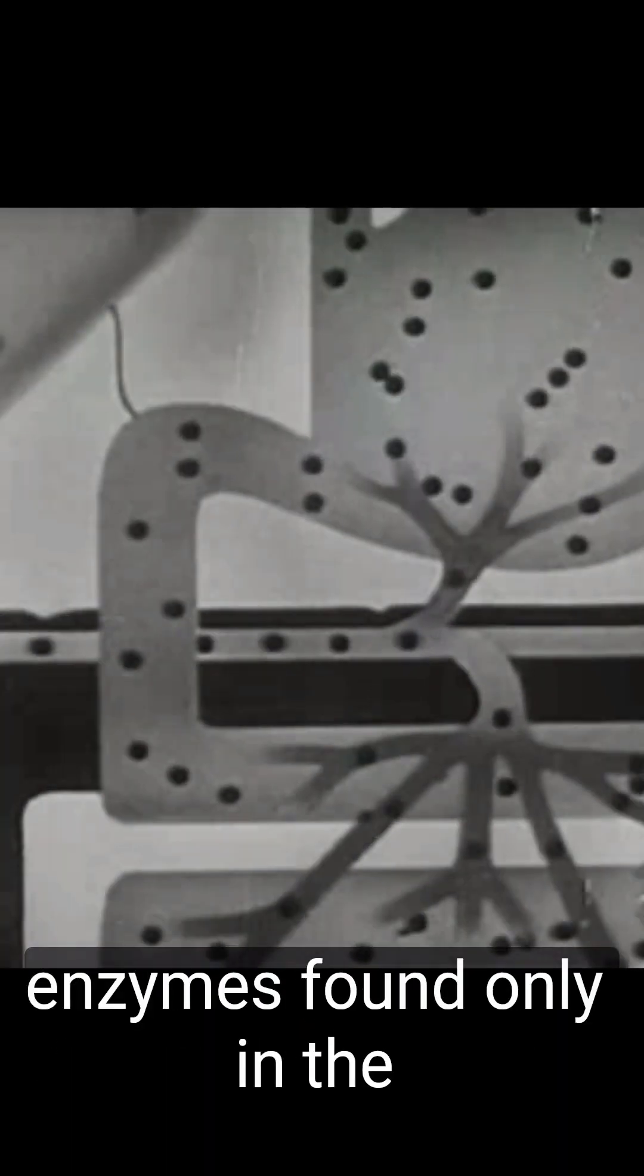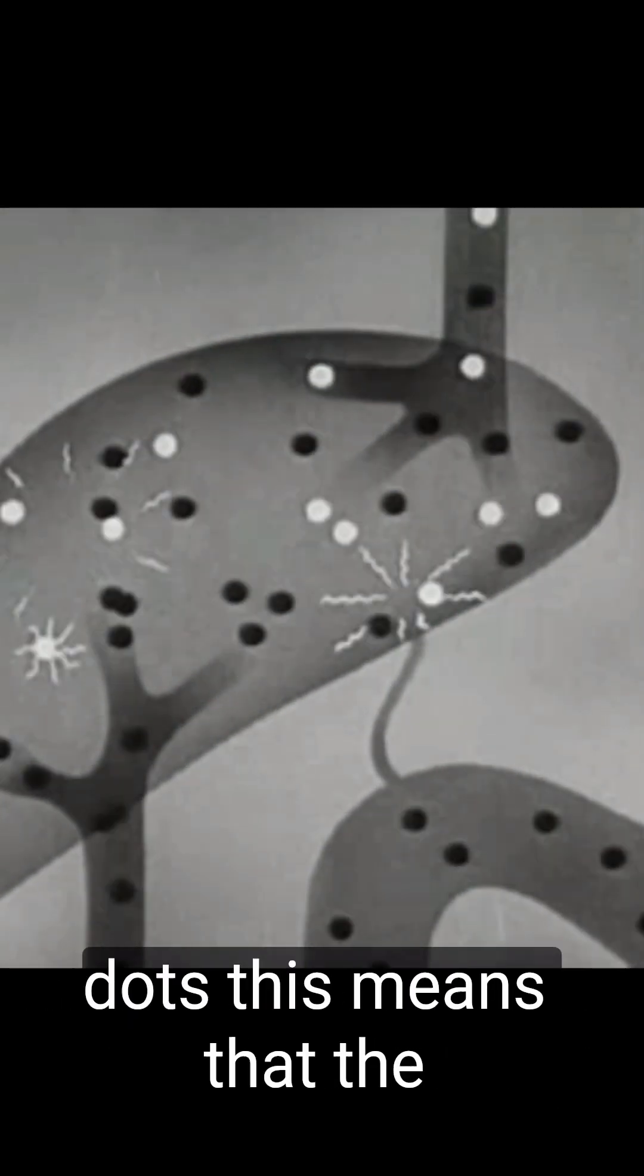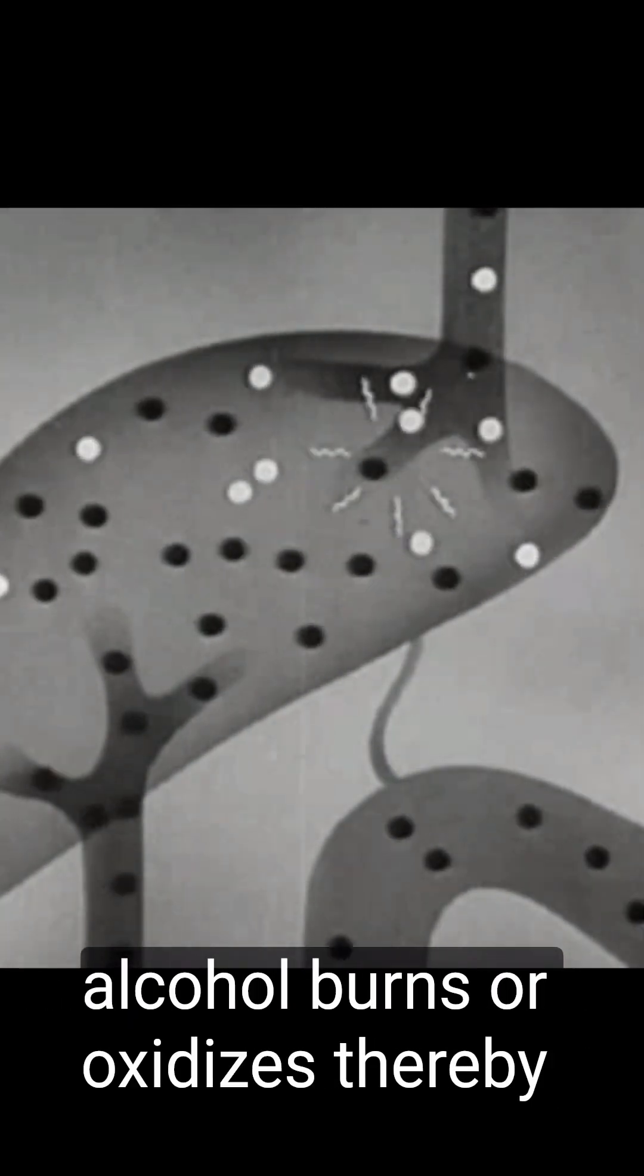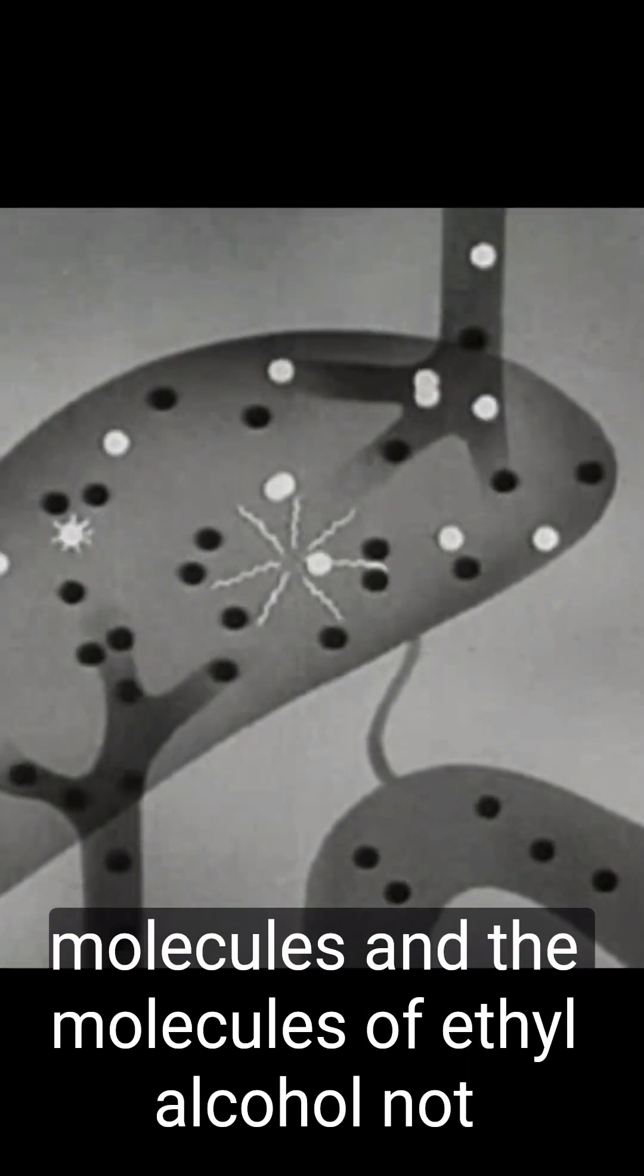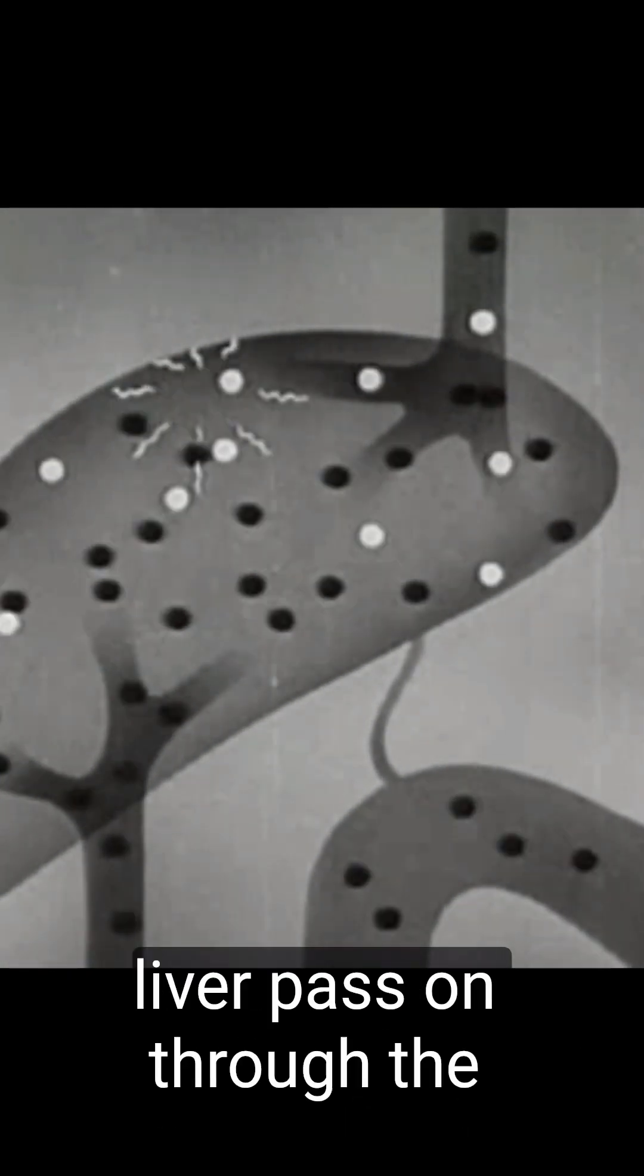In the liver, some of the alcohol undergoes immediate change. Enzymes found only in the liver react with alcohol and change it into acetic acid. The red dot means that the alcohol burns as it oxidizes, thereby releasing calories as heat energy. The acetic acid molecules and the molecules of ethyl alcohol not acted upon immediately by the liver pass on through the veins to the heart.